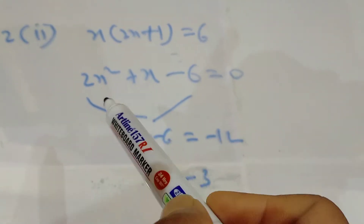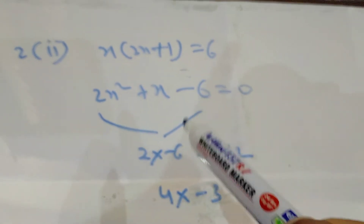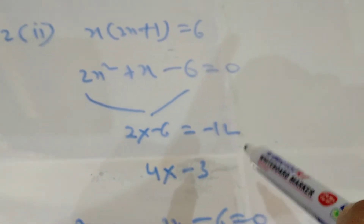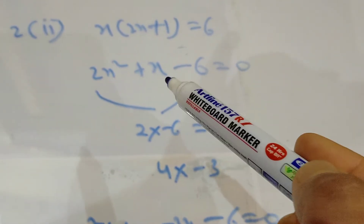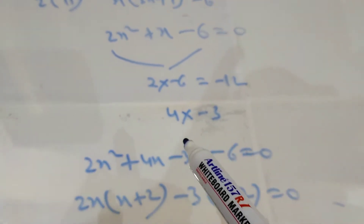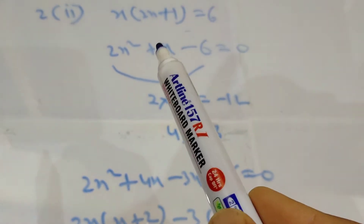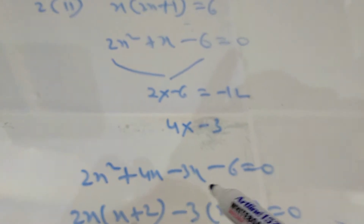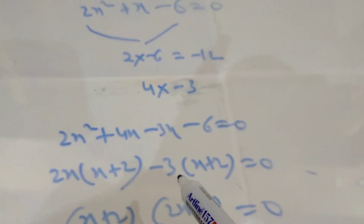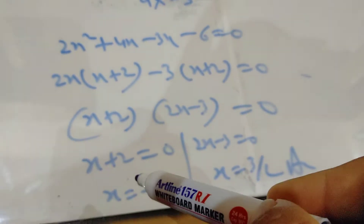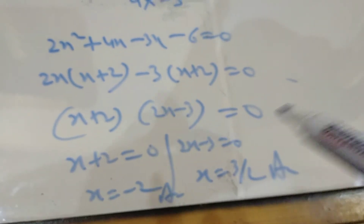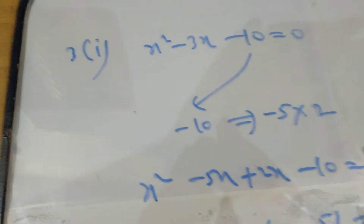Always the right side should be 0, giving us 2x² + x − 6 = 0. This is the quadratic form, and now we find factors using the middle term split method. 2 × (−6) = −12, so we need two factors whose product is −12 and sum is 1 (the coefficient of x). I chose 4 and −3: 2x² + 4x − 3x − 6 = 0. Taking 2x common gives (x + 2), and taking −3 common also gives (x + 2), so (x + 2)(2x − 3) = 0. Applying the zero product rule: x = −2 and x = 3/2.